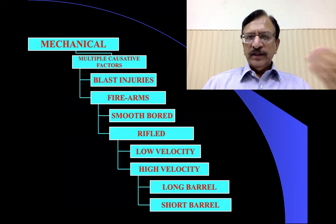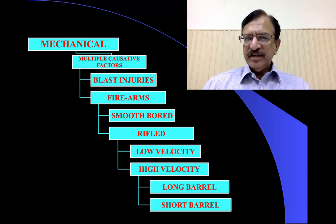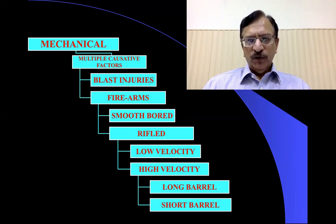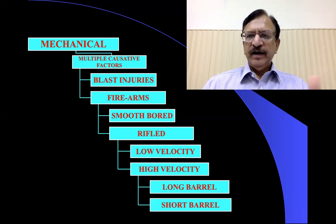When there are multiple causative factors, they can be blast injuries, then firearm injuries — firearm injuries of smooth bore weapon, rifled weapon, and the rifled weapon can be low velocity, high velocity, and having short barrel or long barrel — so they will have a different impact in relation to injuries.